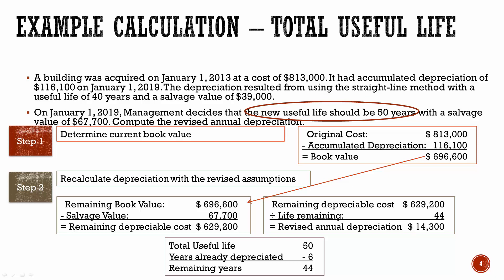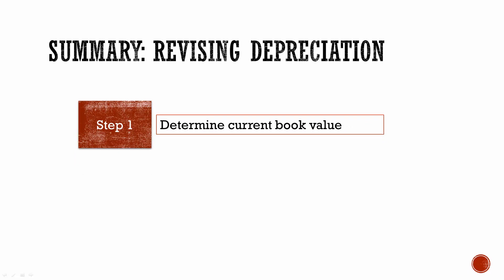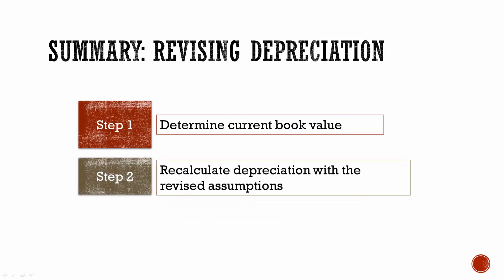That's what they're going to record for depreciation from January 1, 2019, for the next 44 years to depreciate that asset. So in summary, when you're revising the depreciation, first you need to determine the current book value of that asset. Then you can calculate the revised depreciation with your new assumptions.